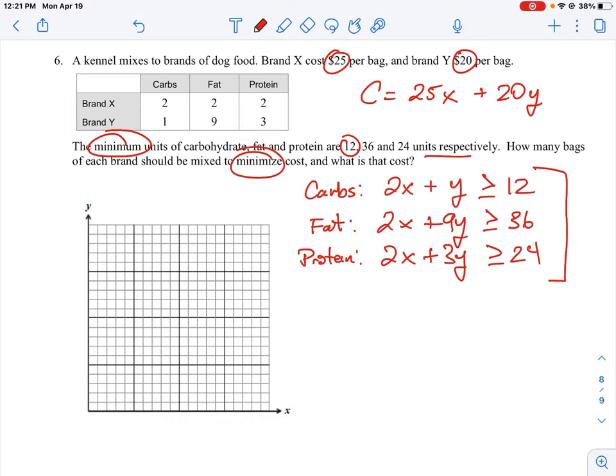And the sort of an implied restriction here is that you can't have less than zero bags of X, Brand X, or Brand Y. So implicitly, we would also have X would have to be greater than or equal to zero, and also Y would have to be greater than or equal to zero, right? Makes no sense to have negative amounts of bags. So this is why our graph would just start at zero and go positive X and positive Y.